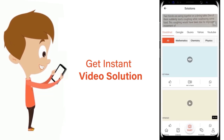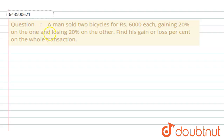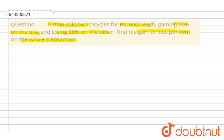The question is: a man sold two bicycles for rupees six thousand each, gaining twenty percent on one and losing twenty percent on another. We have to find his gain or loss percent on the whole transaction.